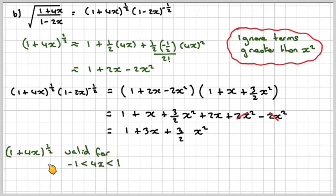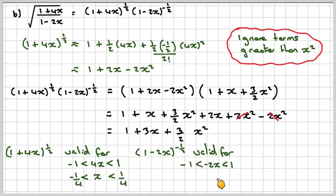So (1 + 4x)^(1/2) is valid from -1 < 4x < 1, so x will be between -1/4 and 1/4. And for this one here, (1 - 2x)^(-1/2), that's going to be valid for -1 < -2x < 1, which means x is between -1/2 and 1/2.